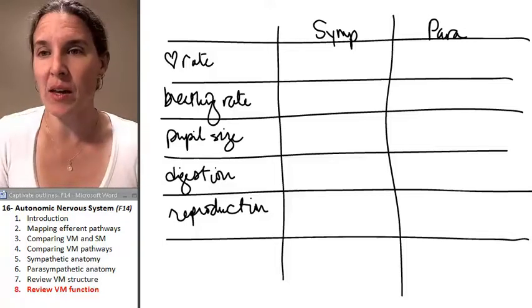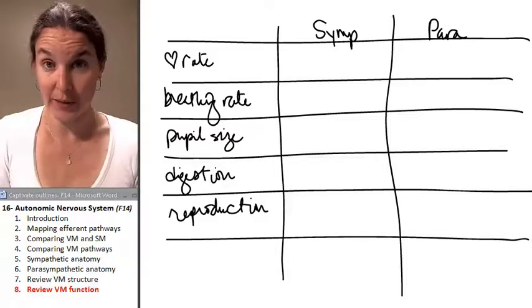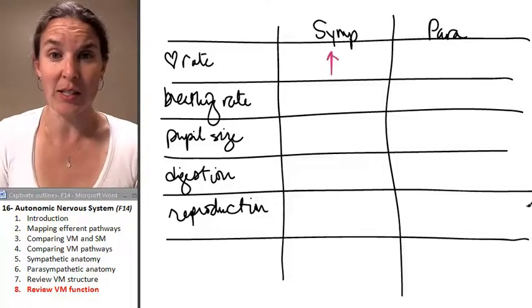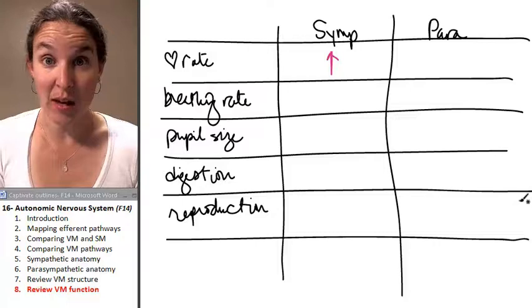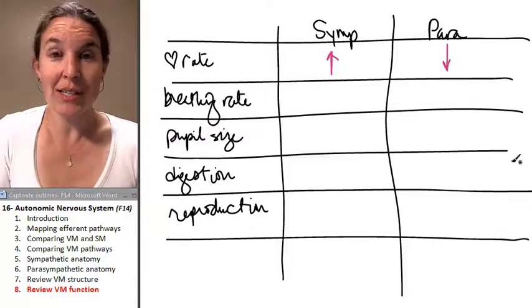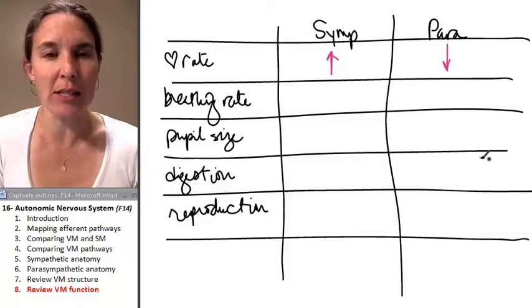How does the sympathetic response affect heart rate? You see a bear, bam, your heart rate increases. How does the parasympathetic system affect heart rate? You see a teddy bear, bam, and your heart rate decreases.